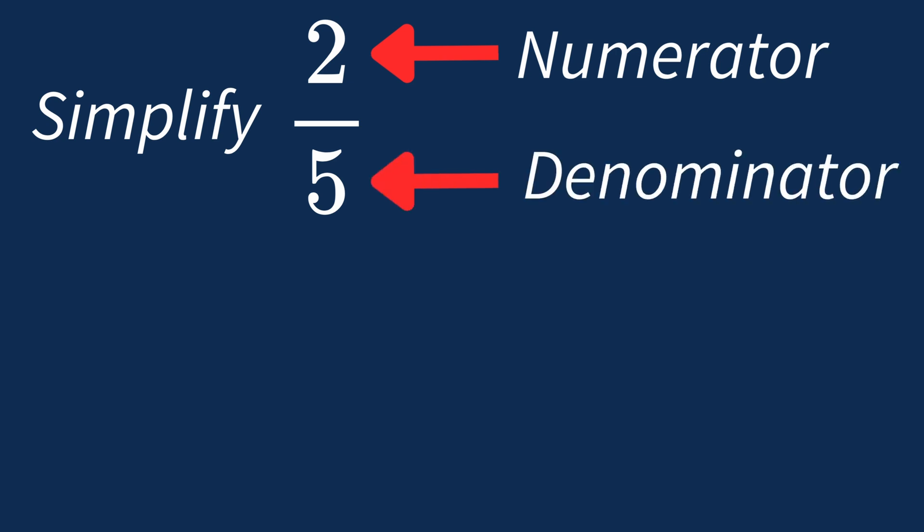A common factor is a number that divides into both numbers evenly. First, let's list out the factors for each number.